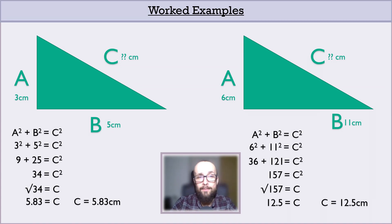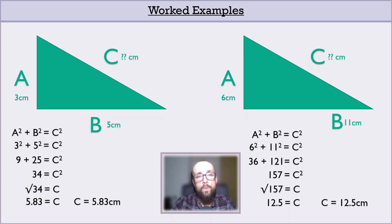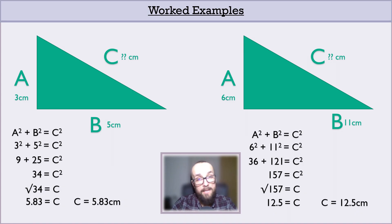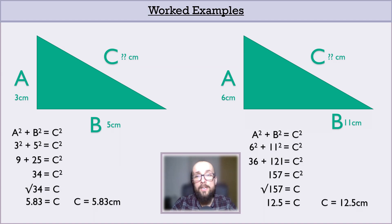For both of these examples, I hope you can see that I've followed the same steps each time: begin with the formula, substitute in our known values, and resolve their squares. Once I've done that, I add those two values together to get C squared, then square root that value to find C. Importantly, I always make sure to add in the units at the end — don't ever forget those, because missing units could lose you a lot of marks in an assessment.